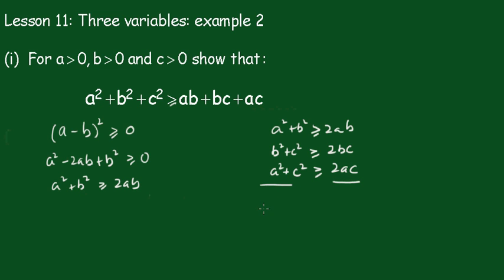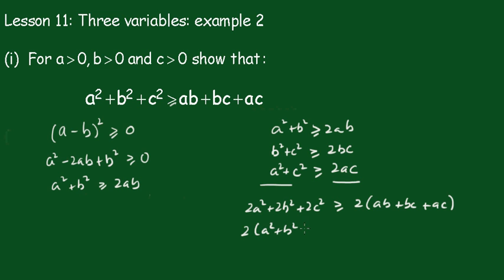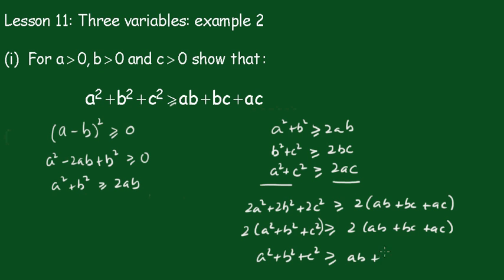Now, adding those all up, we get 2a squared plus 2b squared plus 2c squared is greater than or equal to 2 times (ab plus bc plus ac). Dividing by 2, we get a squared plus b squared plus c squared is greater than or equal to ab plus bc plus ac, as required.